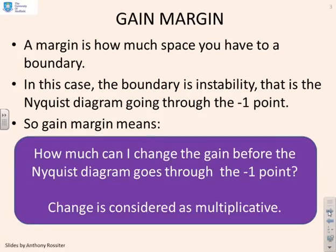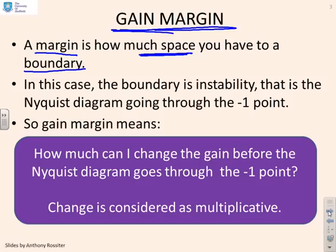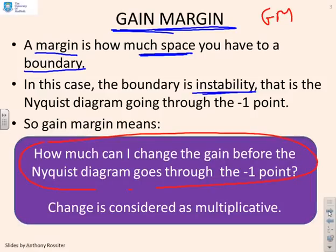Why do we use the word gain margin? A margin is how much space you have between yourself and a boundary. A particular boundary we're interested in is instability — if we go too close to minus one, or past it, we end up unstable. So a margin is how much space in gain we have before we go through the minus one point, i.e. how much change in gain is allowed before going through minus one. This is called the gain margin, summarised as GM.